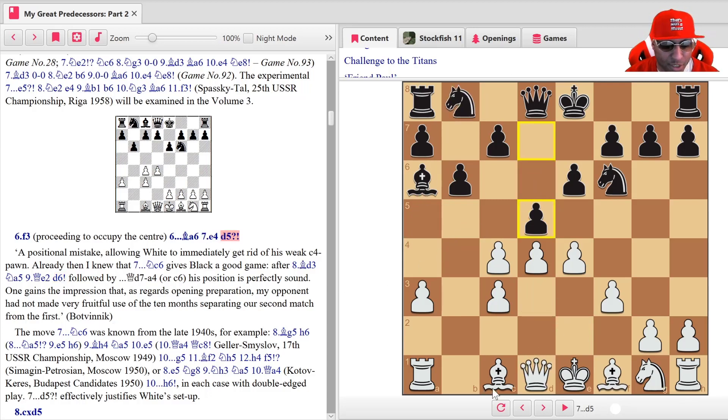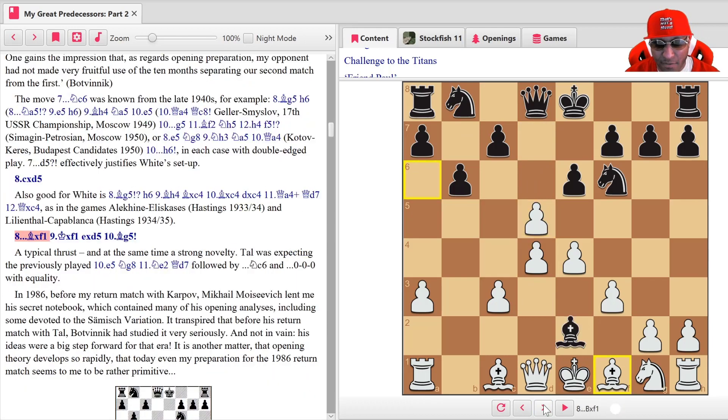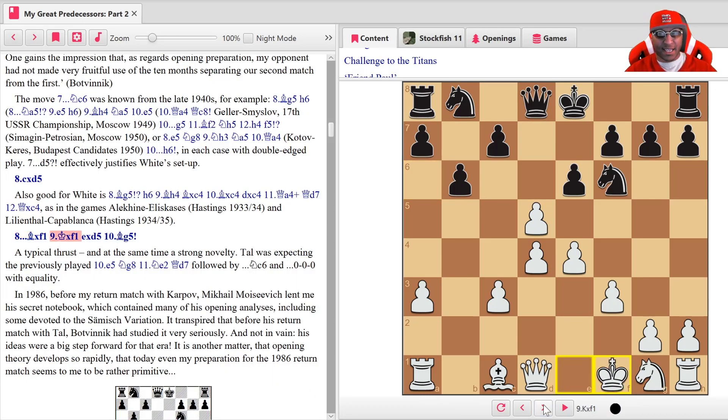But he played d5 here which is interesting and got him in trouble. After c takes d5, bishop takes f1, and king takes f1. You would think that White's king is in trouble, but you'd be surprised guys, this king is actually pretty safe here on f1. E takes d5 and bishop to g5.